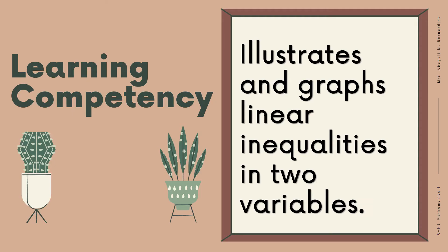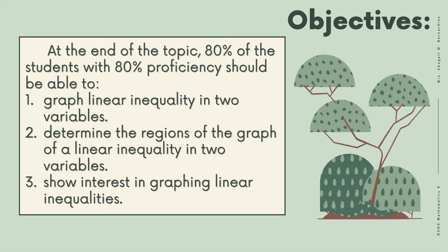Learning competency: illustrates and graphs linear inequalities in two variables. At the end of the topic, 80% of the students with 80% proficiency should be able to: first, graph the linear inequality in two variables; second, determine the regions of the graph of a linear inequality in two variables; and third, show interest in graphing linear inequalities.